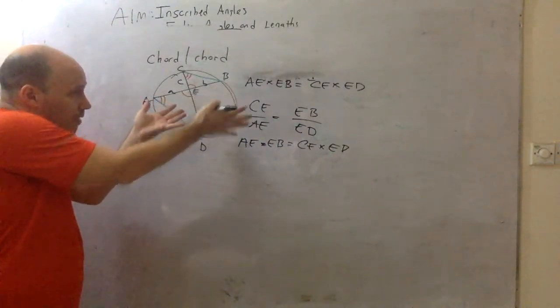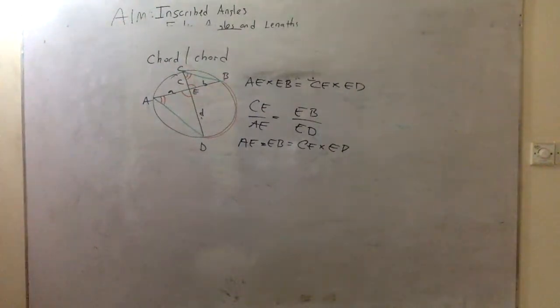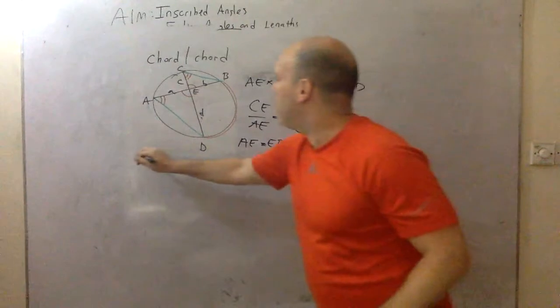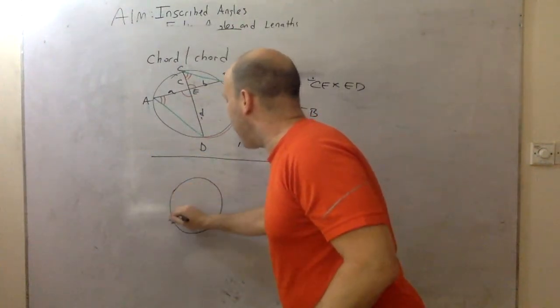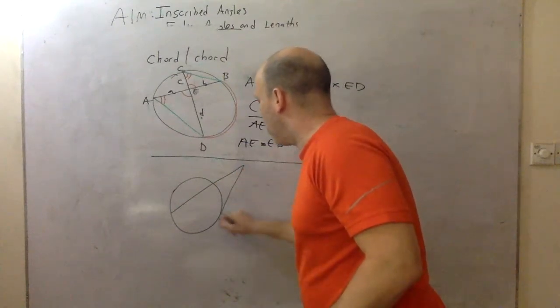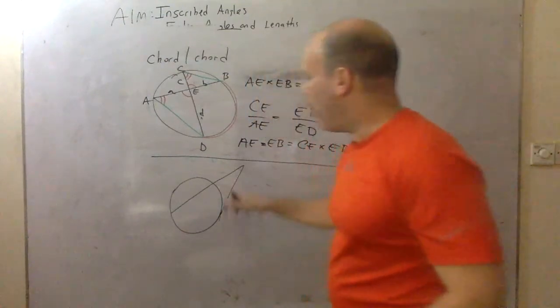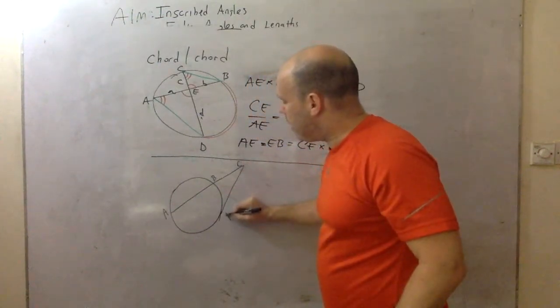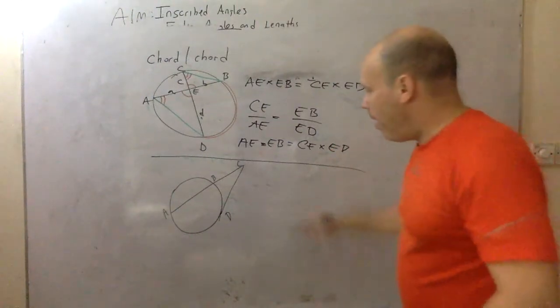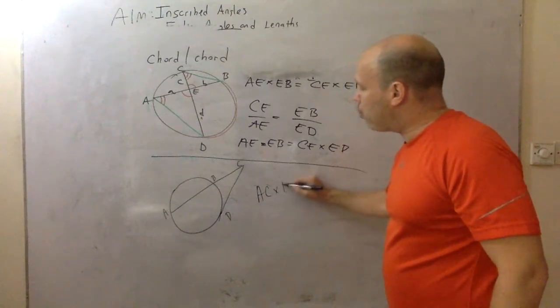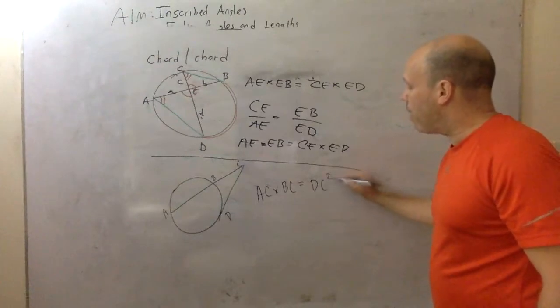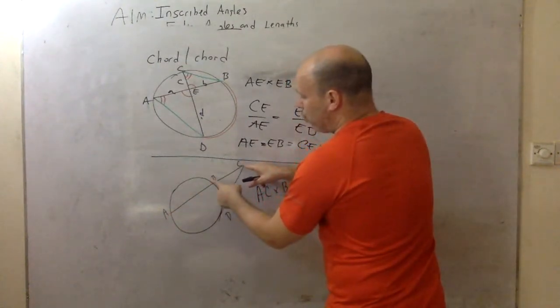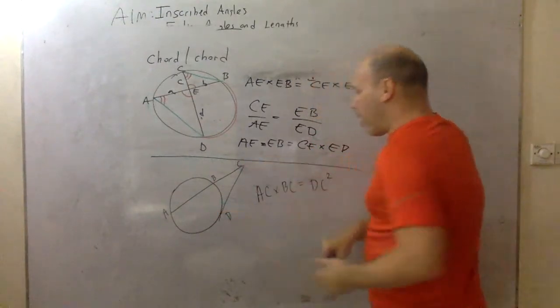And we did that, we constructed, we did this by similar triangles. Next. What are we interested in? Secant, tangent. Ready for this one? We have a secant and a tangent. We have A, B, C, and D. The claim is, this is cool, that the entire secant times the external part is equal to the tangent squared. Once again, the entire secant times the external is equal to the tangent squared.